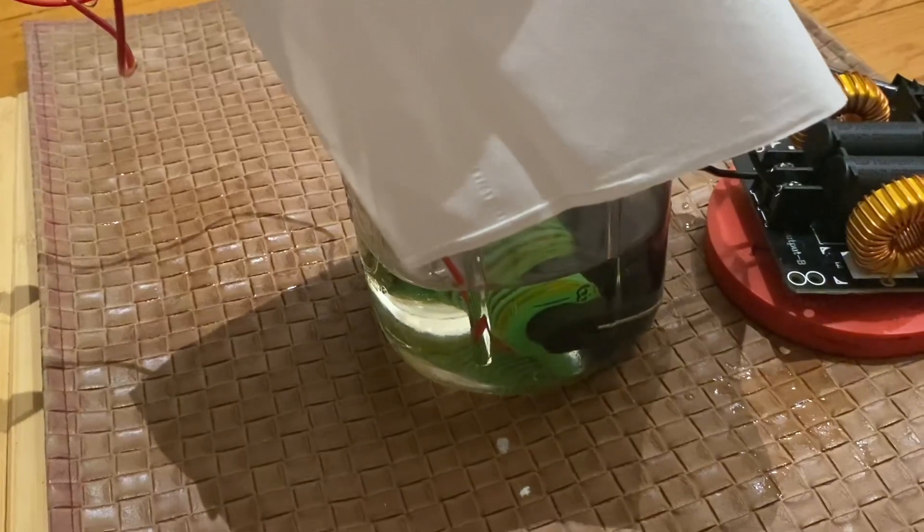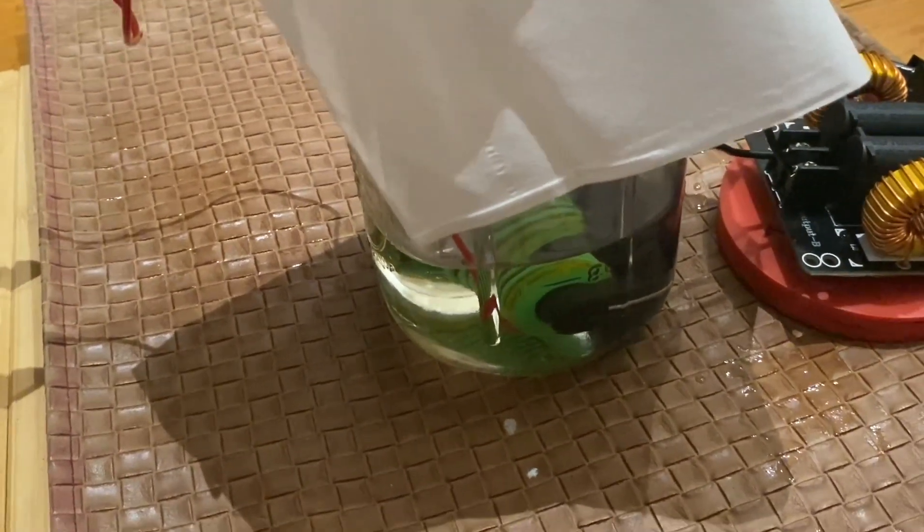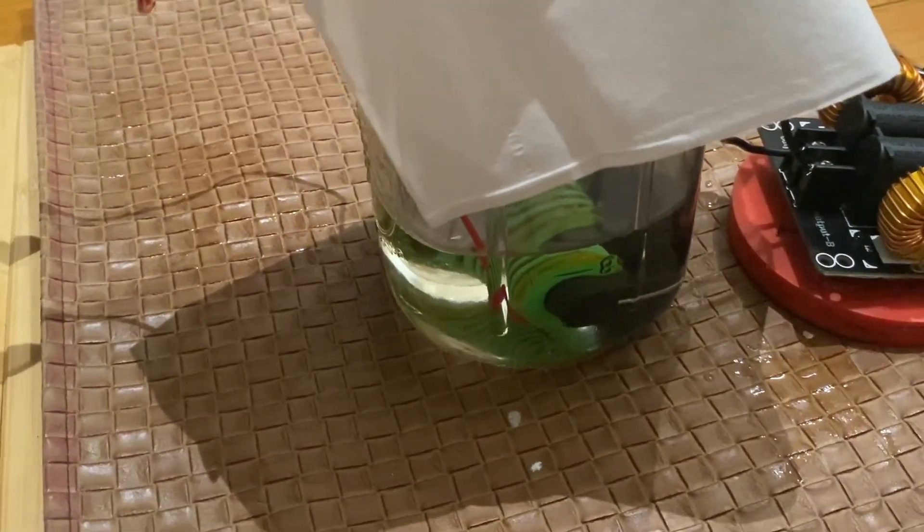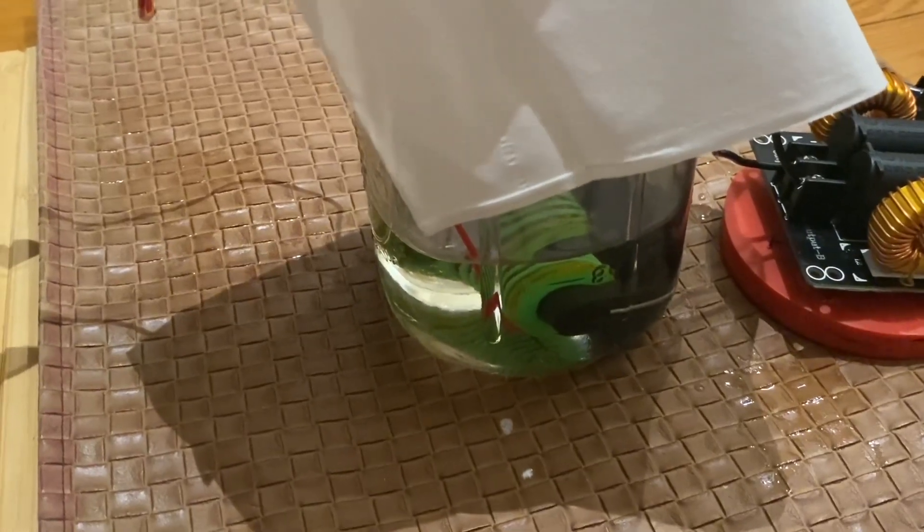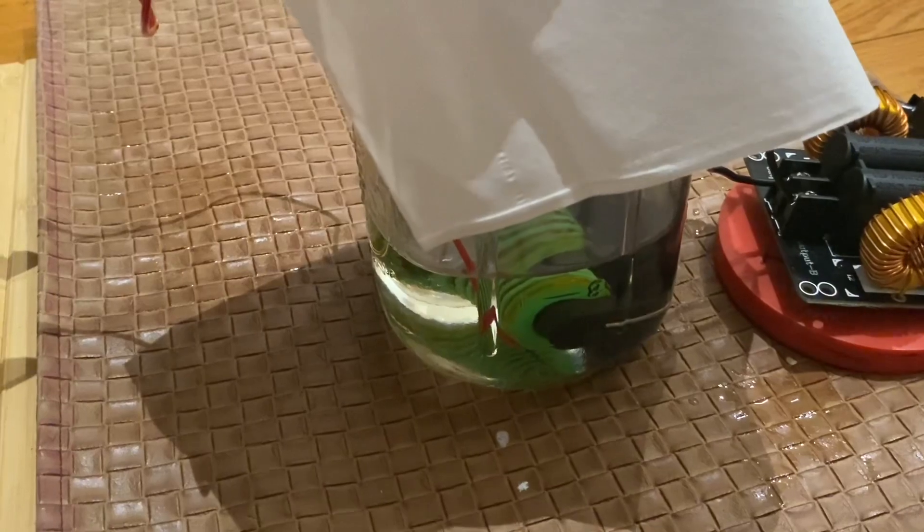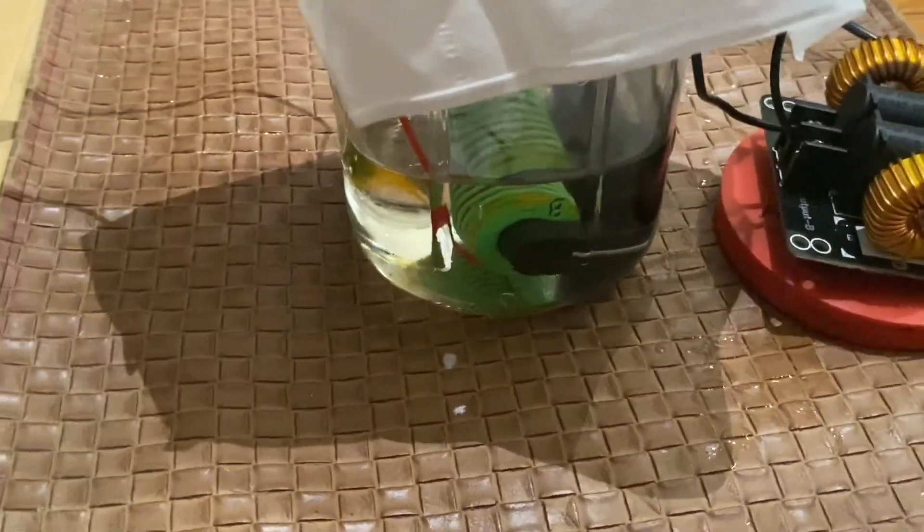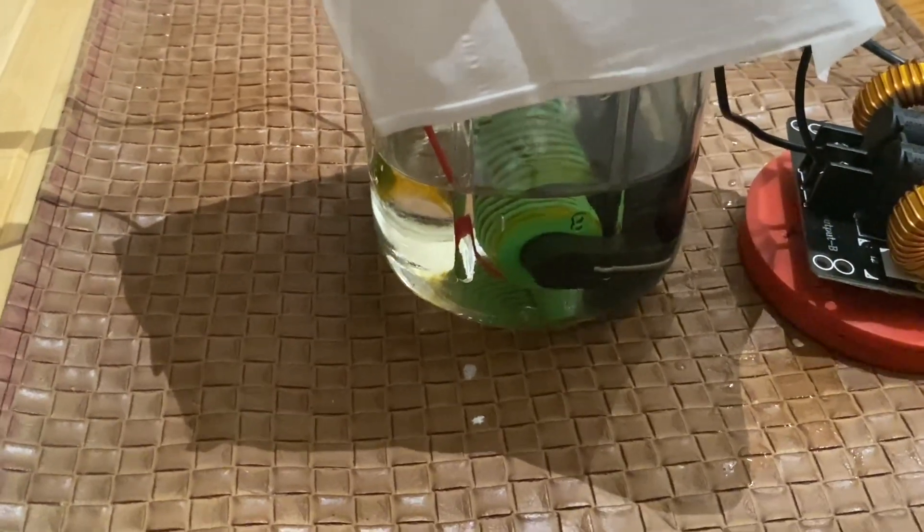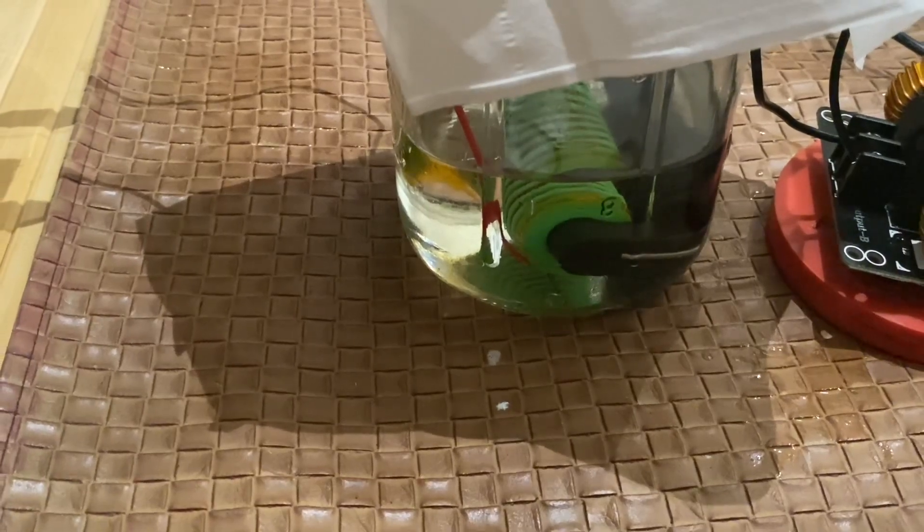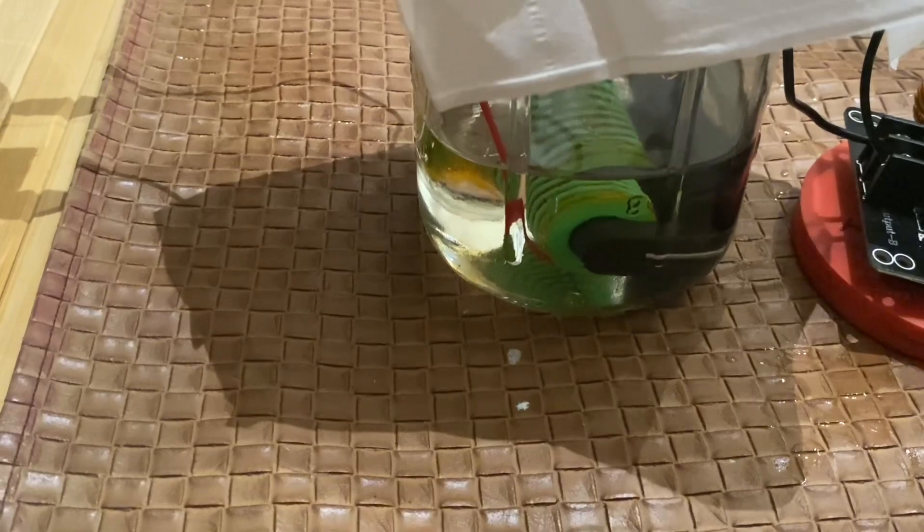The reason why I did this is because normal flybacks are nowhere near the voltages required for an X-ray tube, so you need to multiply the voltage to get the proper amount. Unfortunately, this only works if you start off with AC which is then rectified to DC through the multiplier. So in order to do this, you can't start with a regular flyback because normal flybacks have an internal rectifier which rectifies the voltage to DC.